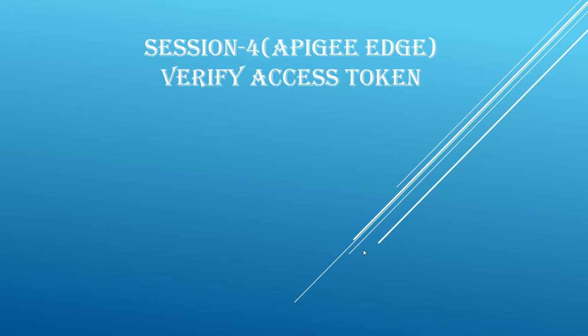This is session 4 of the Apigee Edge course for beginners. In this session we will see in action how to verify an access token. In our previous video session we have seen how to generate an access token with client credentials grant type — if you haven't watched it, I would strongly recommend you watch it before proceeding.